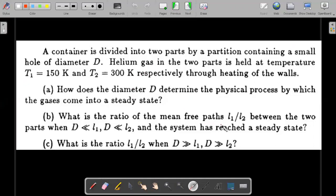What is the ratio of the mean free paths L1 divided by L2 between the two parts when capital D is very small? And in part C, the same question when capital D is large compared to the mean free paths. This was a question from a previous Princeton University exam, but has good potential to become a JEE Advanced comprehension-based question. Try it now and then check my solution.